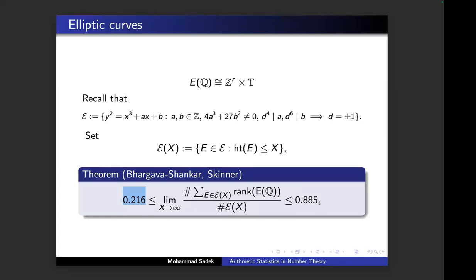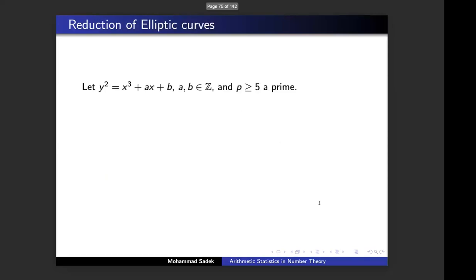Here is another aspect of arithmetic statistics. Arithmetic statistics can tell us something about ranks of elliptic curves. What I'm going to talk about now is another aspect of elliptic curves. The good thing about elliptic curves is that when you start with one elliptic curve over the rationals, I can always reduce this elliptic curve modulo any prime.